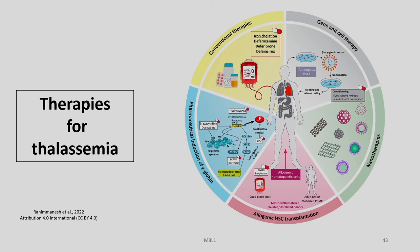You now know about the various basic aspects of the disease, and today we are discussing some of the therapies which are available for thalassemia or which are under development. Let us begin with the conventional therapies where you have iron chelation, then pharmaceutical induction of gamma globin, then some advanced therapies including allogeneic hematopoietic stem cell transplantation and potential nano therapies for thalassemia.